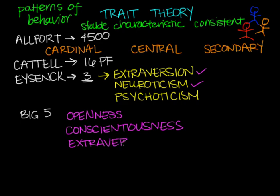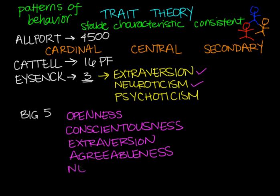The fourth is agreeableness. And in agreeableness, we're asking the questions, are you kind or are you cold? Are you appreciative or unfriendly? And the last we've already seen from Eysenck, and that is neuroticism.